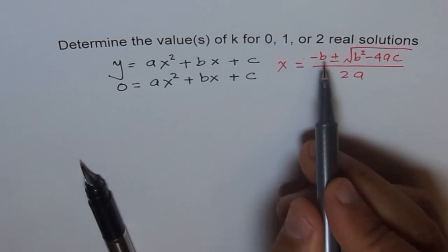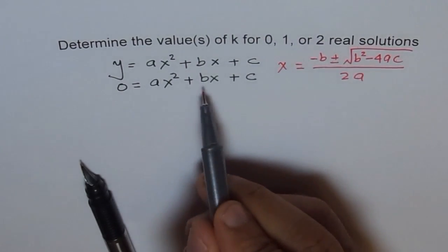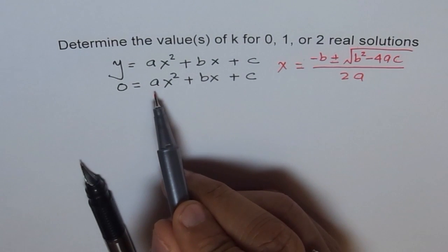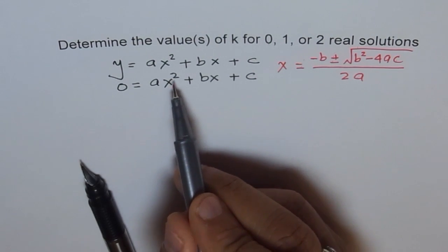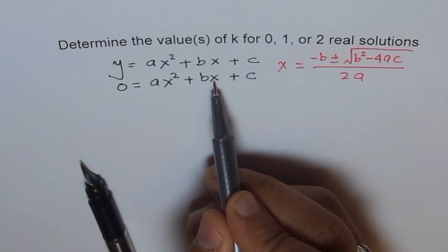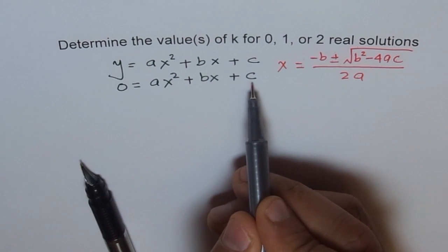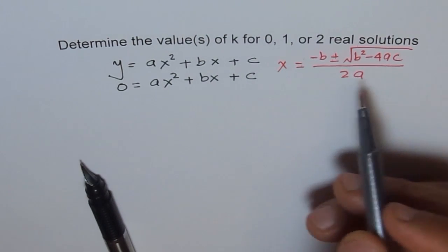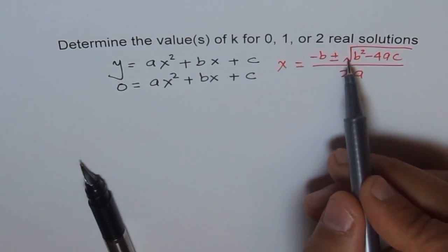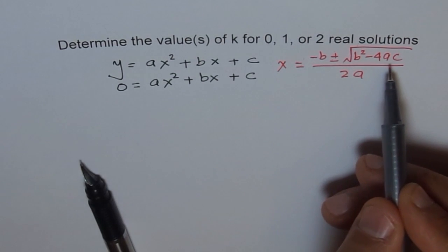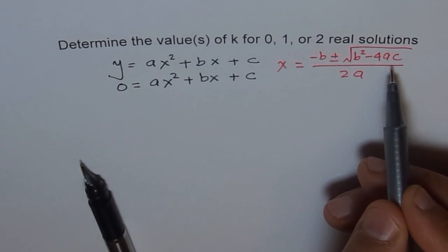Here, a, b, c are the coefficients: a is the leading coefficient of x squared, b is the coefficient of x, and c is the constant term. This expression under the radical, b squared minus 4ac, is called the discriminant, and we can denote it by the letter D.